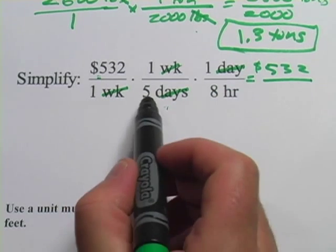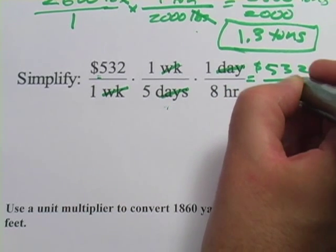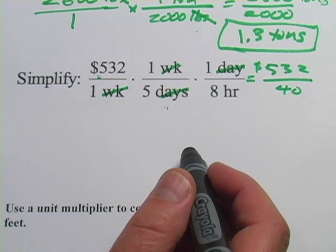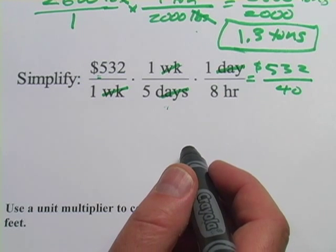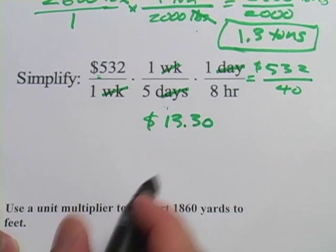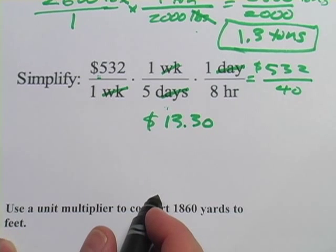And on the bottom, it's 1 times 5 times 8, that's 40. And now we have to just do that division, 532 divided by 40, if you plug that into your calculator, I think you're going to get $13.30 an hour. That's not the worst job to have.